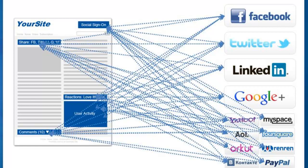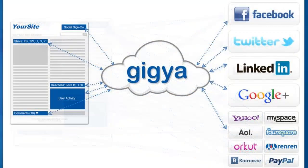That's where Gigya comes in. We simplify all this. We like to think we invented the super social API. We provide a single API that sites can implement, and on the back end we're connecting to Facebook Connect, Twitter Connect, LinkedIn Connect, and anything else that comes out. Think of it as: implement once, get many, forget about the changes. We just make it very, very easy.